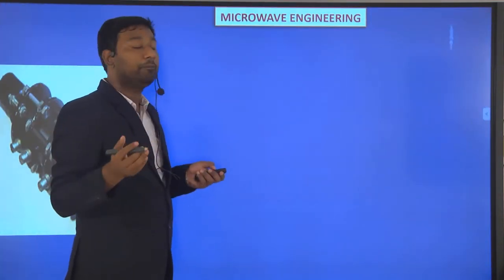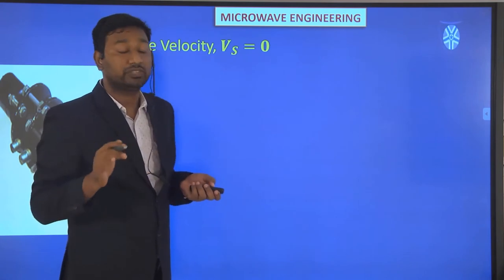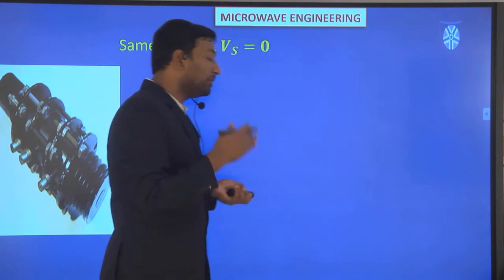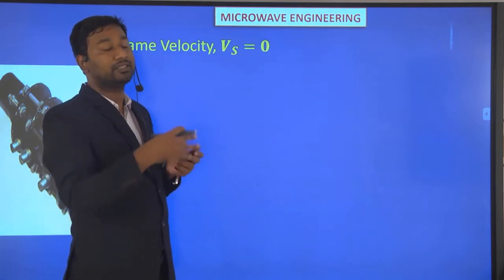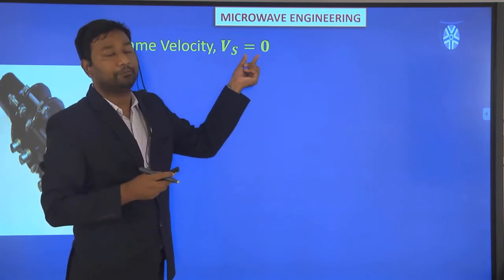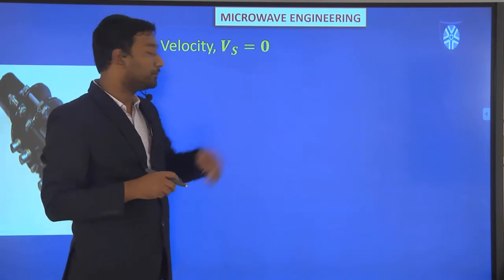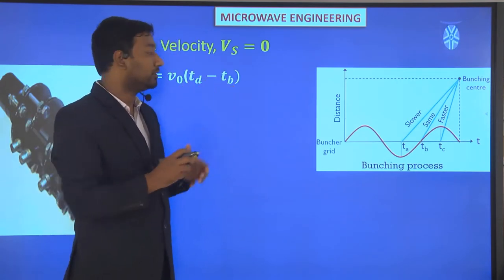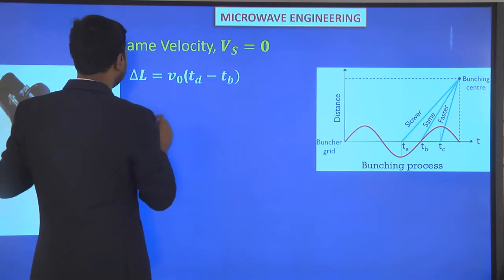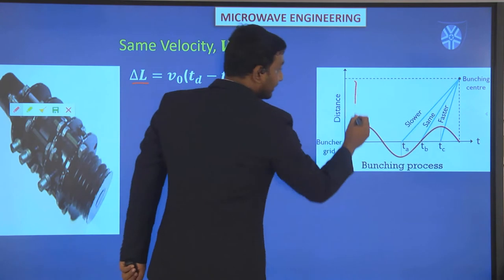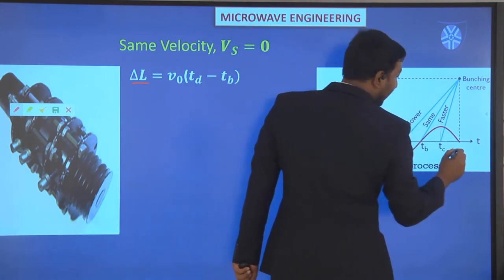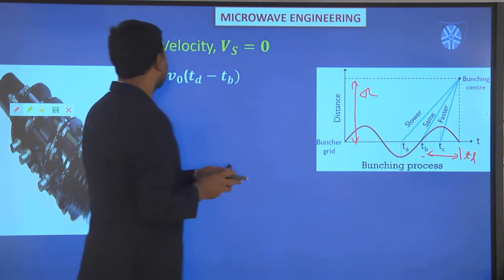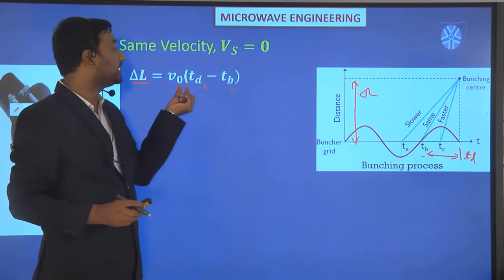We will calculate exactly when bunching happens and the distance ΔL. First, when Vs equals zero (same velocity), the velocity before and after the buncher cavity is the same. So ΔL equals V0 times (Td minus Tb), since distance equals velocity times time.